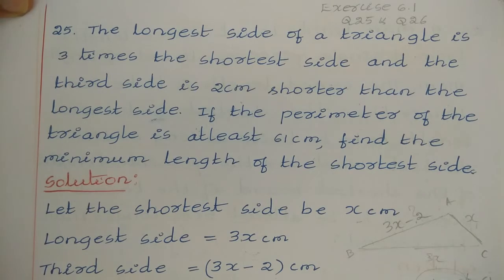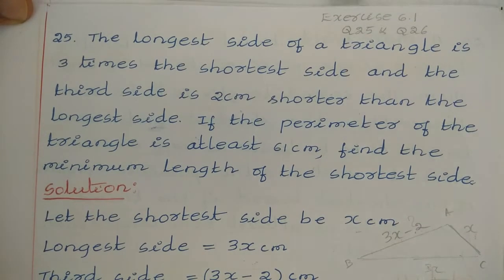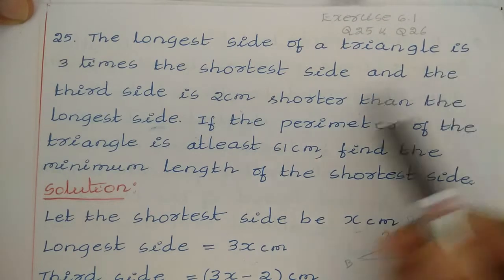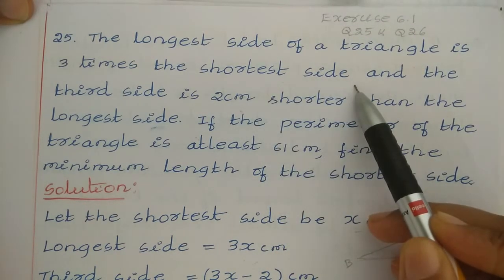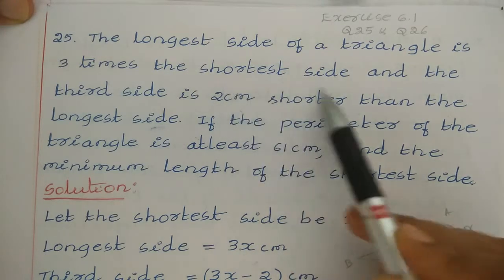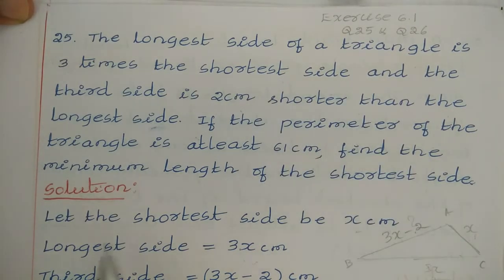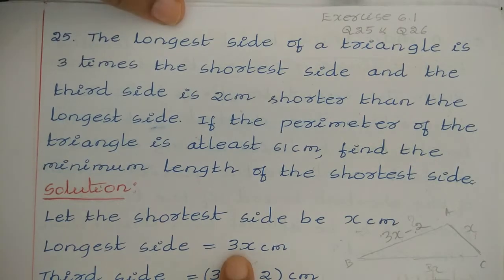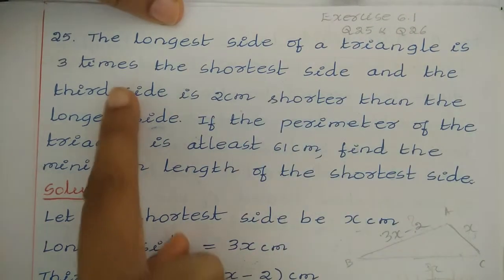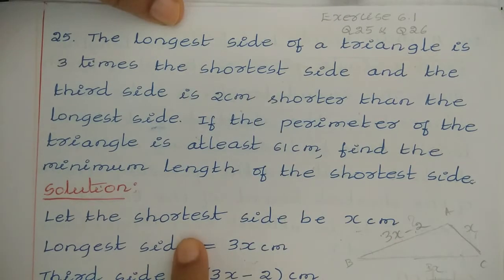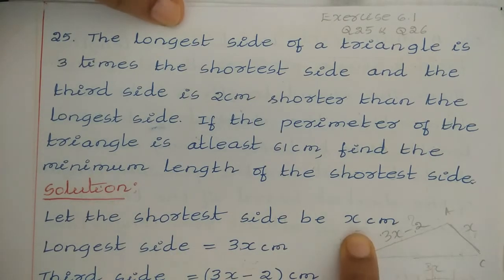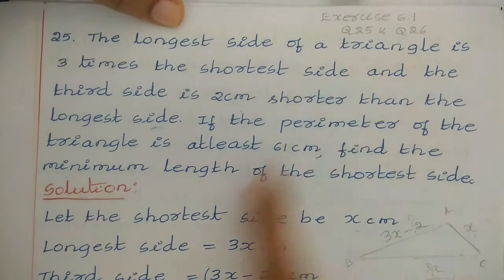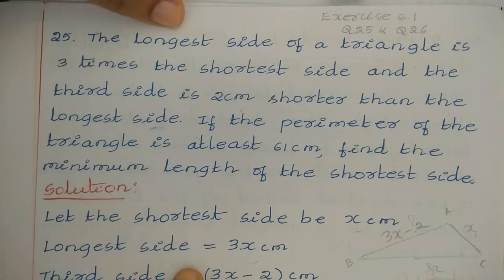In this question they are referring to a triangle. They have given that the longest side of a triangle is 3 times the shortest side, but we don't know the shortest side. So let us say the shortest side of the triangle is x cm. Based on this, the longest side is 3 times the shortest, so the longest side is 3x cm.